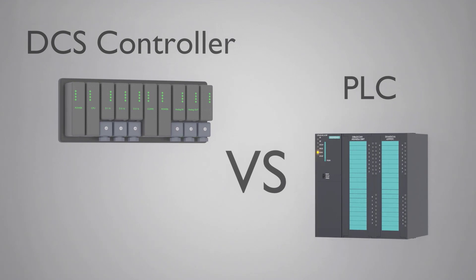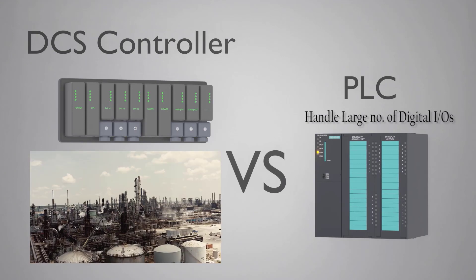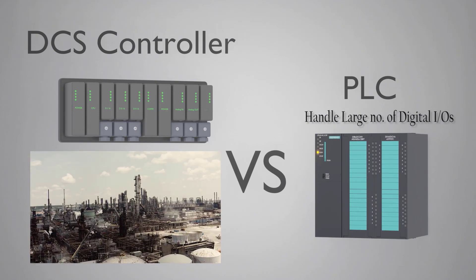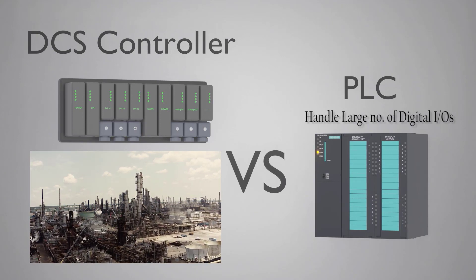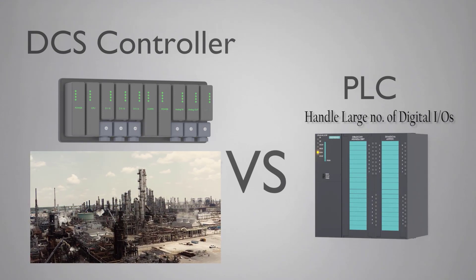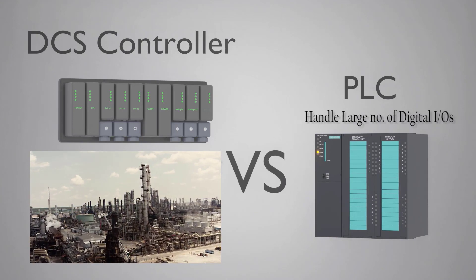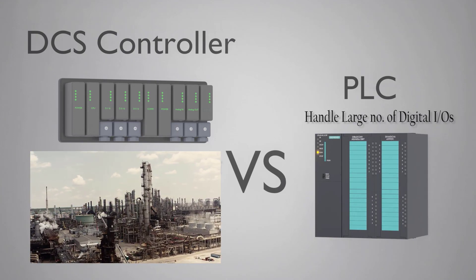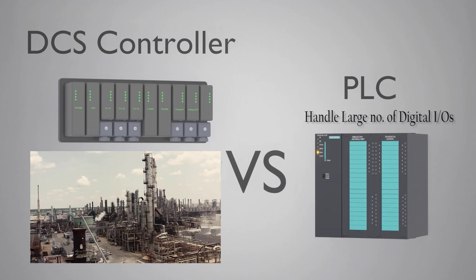PLC is very good where you have a large number of discrete I/Os. But in industries like petrochemical, oil and gas, fertilizer, and power plants, you have a large number of analog complex loops. To handle a large number of analog loops, DCS plays a great role.